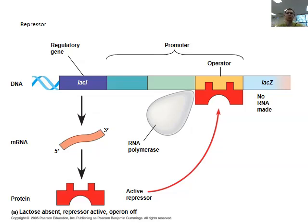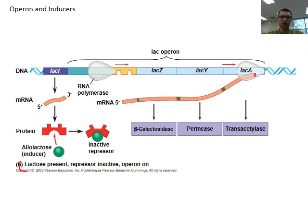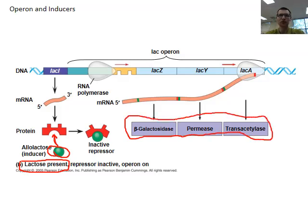Because proteins do certain jobs in the body, you don't always need them — only when there's a job to be done. In this case, lactose or a certain sugar is absent. If there's no sugar, why do you need an enzyme to break it down? Here we've got a repressor that is active and can shut off the enzyme like a light bulb, so no RNA is made because this operon and operator are turned off. However, if lactose is present, it will induce or tell the repressor to stop holding it back — it needs to make enzyme to break down the sugar — so it inactivates the repressor.